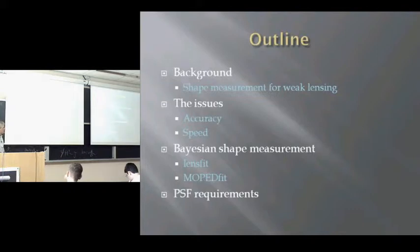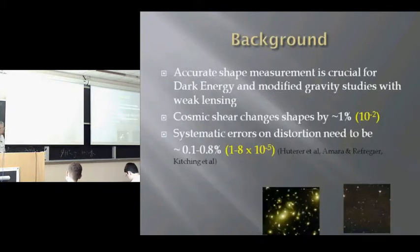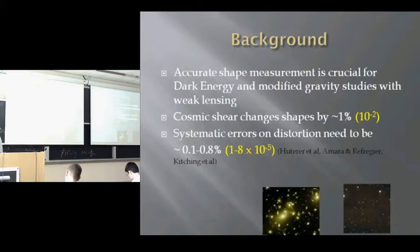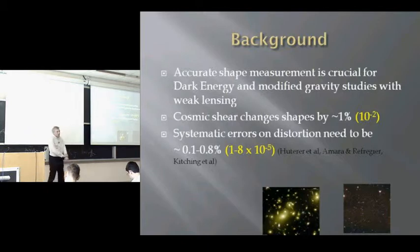I'll talk about two Bayesian methods: LensFit, which is published, and one I'm working on called MOPED-fit, which may offer some advantages. Cosmic shear itself gives rise to distortions which are very small — around about 1% distortions in the ellipticities — and depending on what you're trying to measure, you need to measure those shapes to a systematic error of around 1 part, or a few parts, in 10 to the 3.